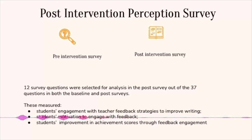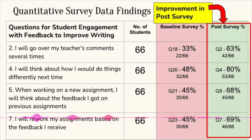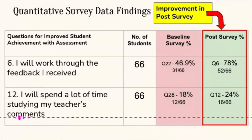There are actually 37 survey questions but we're showing a few. We looked at questions measuring students' engagement with teacher feedback, their motivation, their desire to work with feedback, and improvement in scores. Some questions asked whether they want to go through their teacher's comments, whether they'll do things differently, think about feedback, and rework assignments based on feedback. Initially the pink result looked quite low. We applied the project on two classes, and were quite encouraged that there was improvement in how they interact with feedback after the interventions.